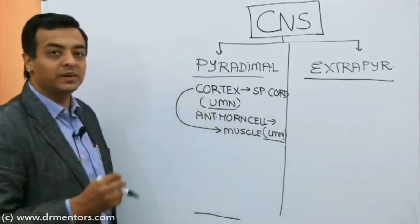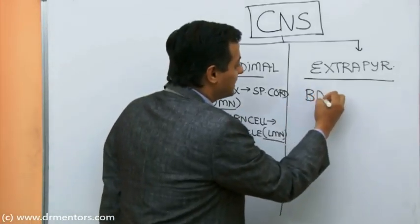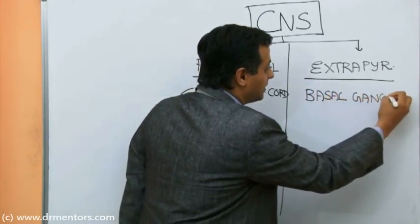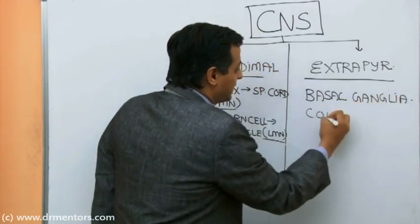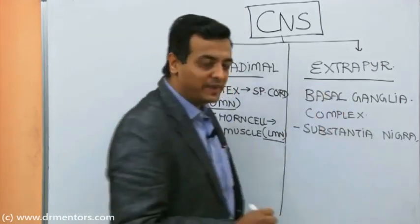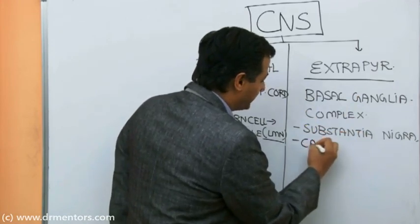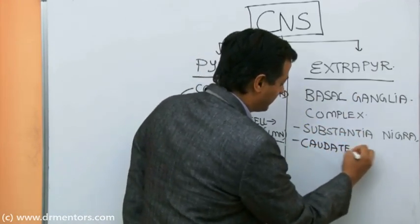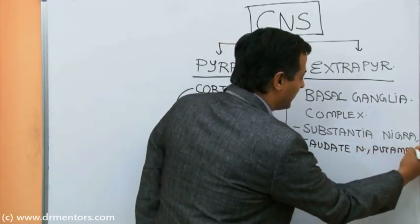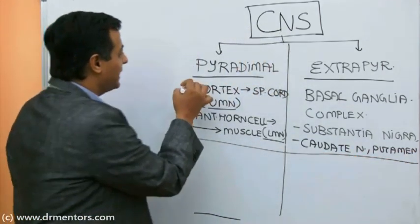The pyramidal tract starts from the cortex and ends at the muscle. The extra-pyramidal system consists of the basal ganglia complex, which includes the substantia nigra, the caudate nucleus, and the putamen. This is the anatomical extent of the pyramidal and extra-pyramidal systems respectively.